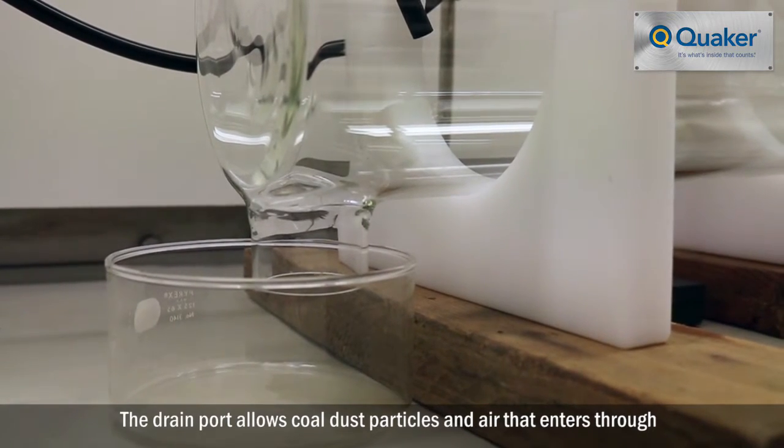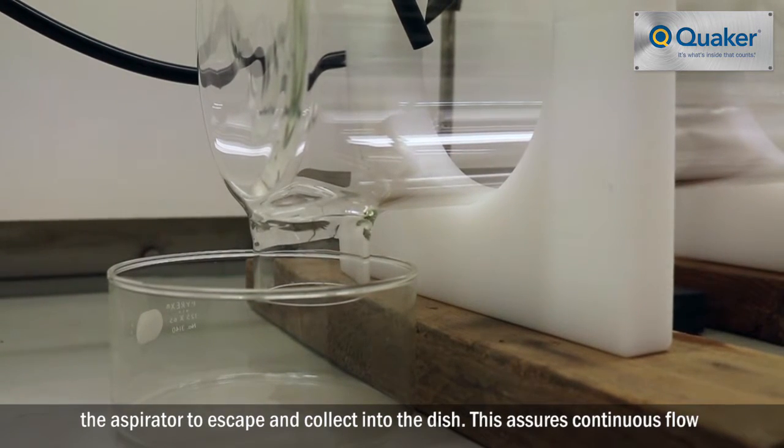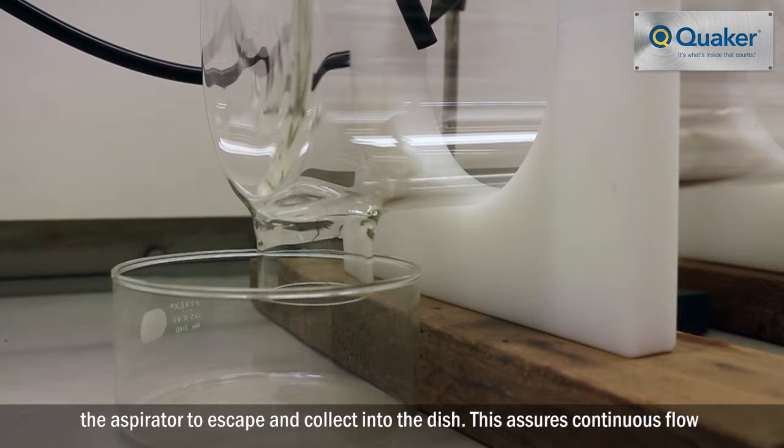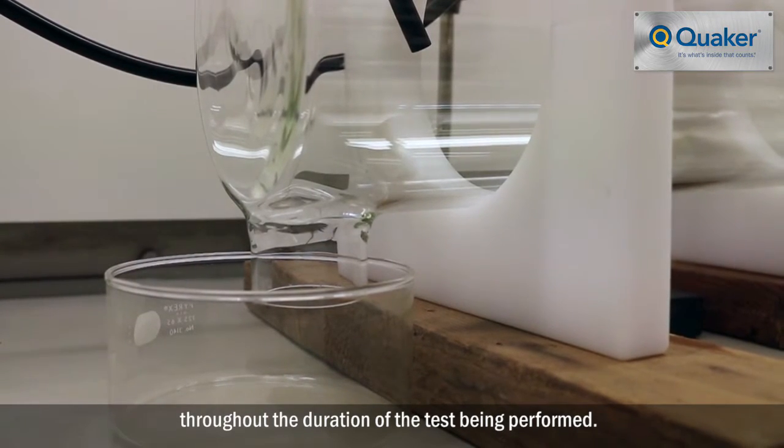The drain port allows coal dust particles and air that enters through the aspirator to escape and collect in the dish. This assures continuous flow throughout the duration of the test being performed.